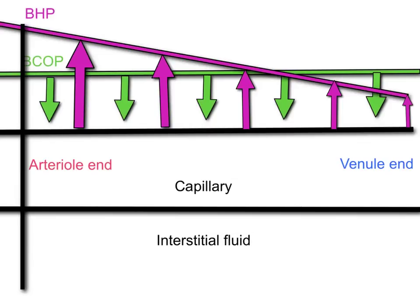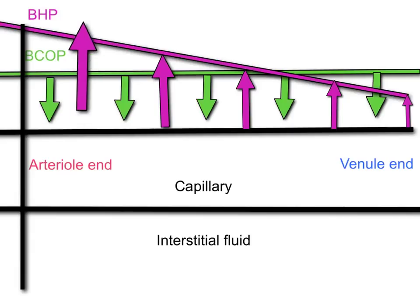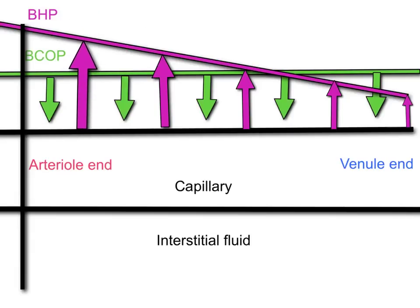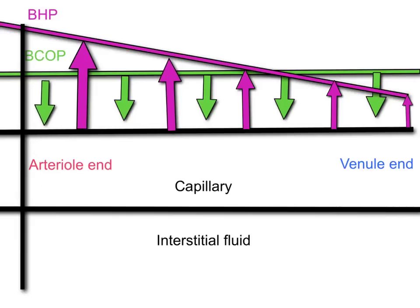There are two pressures that we have to look at. In purple we have the blood hydrostatic pressure, and in green we have the blood colloid osmotic pressure. Blood hydrostatic pressure is an outward force tending to force fluid out of the capillary. The blood colloid osmotic pressure is an inward force tending to move fluid into the capillary. So we have two opposing forces.